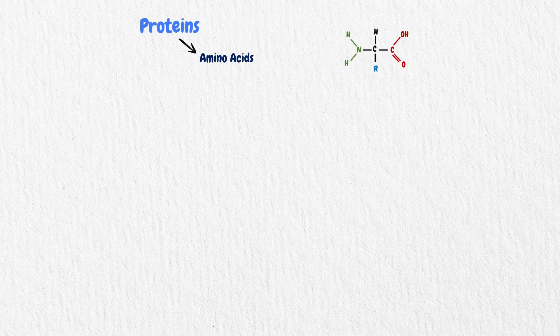Proteins are made up of amino acids. What's the structure of amino acid? It contains amino group, side chain and carboxylic group.